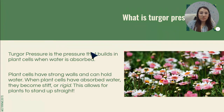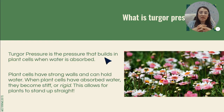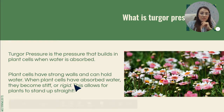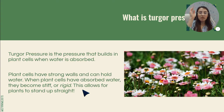Turgor pressure is the pressure that builds inside of plants whenever water is absorbed. Plants have really strong cell walls that are strong enough to hold water inside of their cells. Whenever the plant cells have enough water, they become stiff — or the vocabulary word is rigid — and that's what lets plants stand up straight. When a plant stands up straight, it is called rigid.